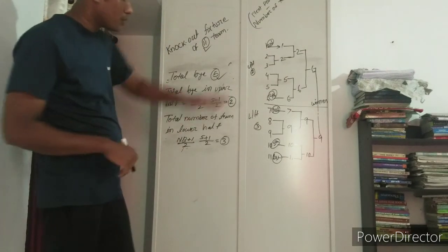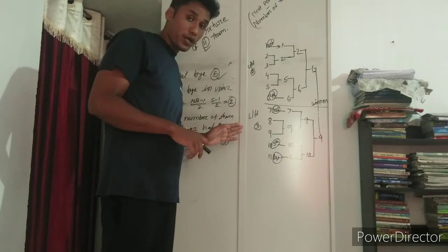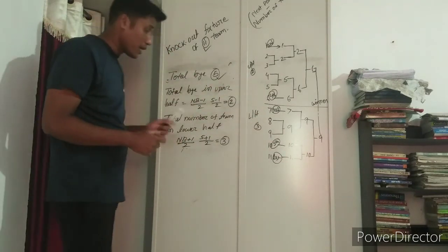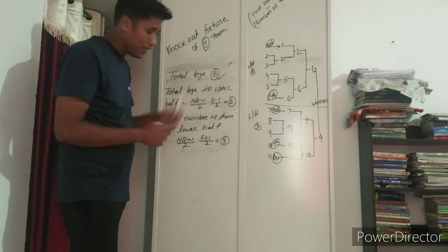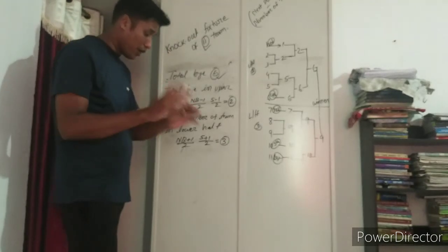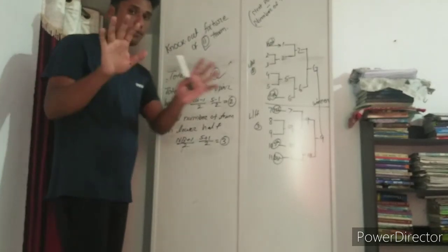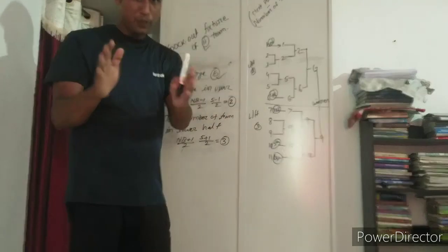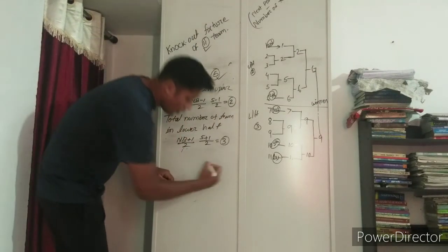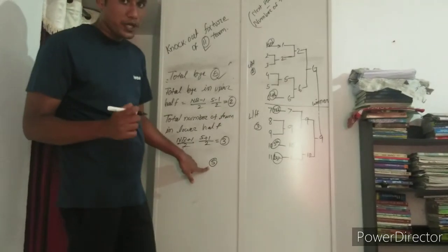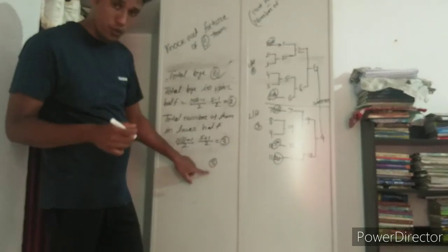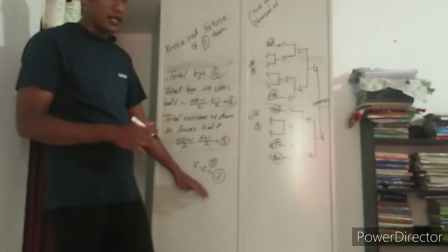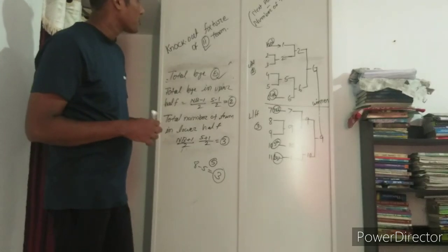Simple formula summary: when you calculate the upper half, use n plus 1 divided by 2. For the number of byes in the upper half, use n minus 1 divided by 2. For the lower half, use n minus 1 divided by 2. For byes, use next power of 2 minus number of teams. For example, if there are 5 teams, the next power of 2 is 8, so 8 minus 5 equals 3 total byes. I hope everyone understood.